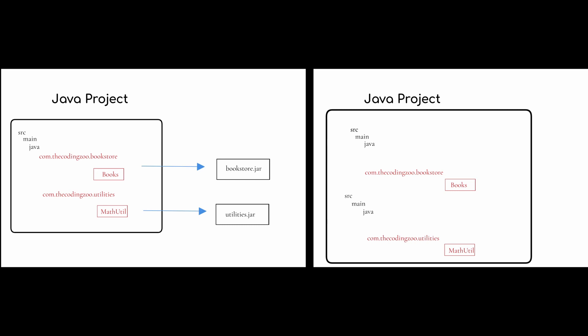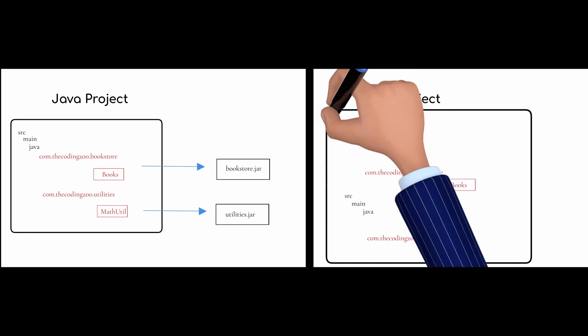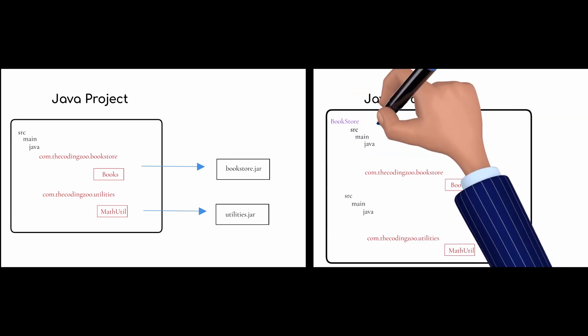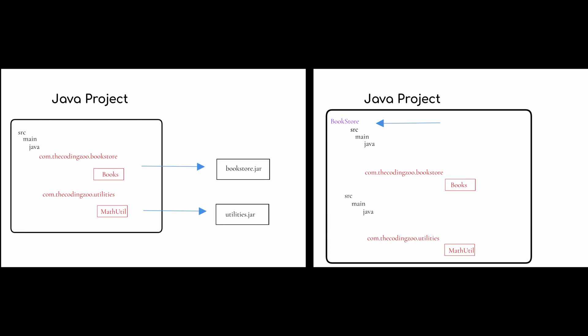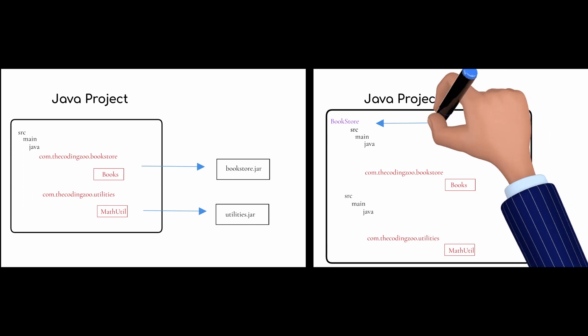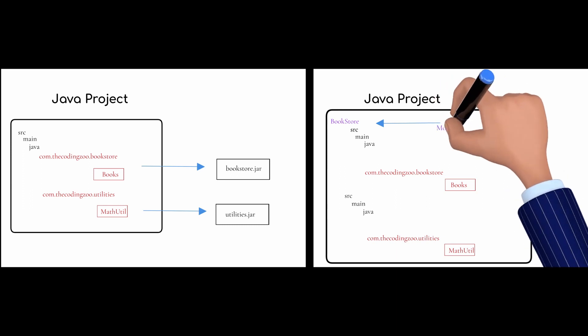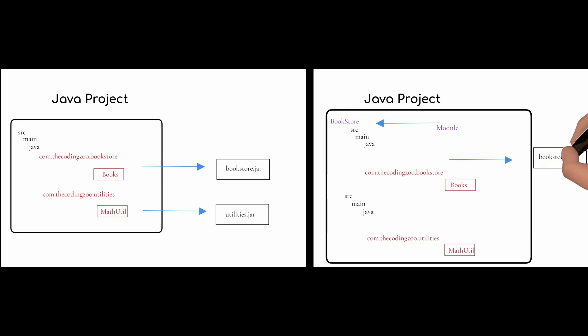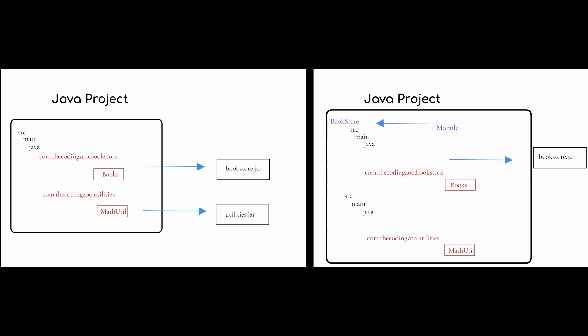So let's talk about modules. Modules is a new way to provide more context around separating and giving your code meaning one step above packages. A module is a new way of grouping packages instead of just using a project. So we went from a Java project that contains packages with code, to a Java project which contains modules, and underneath those modules are packages, and those packages contain code. Another thing to note is that a module is now one-to-one with a jar — if you define a module, that module has to be packaged in its own jar.